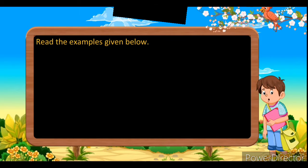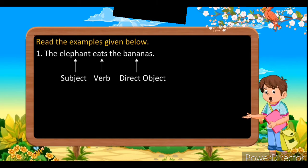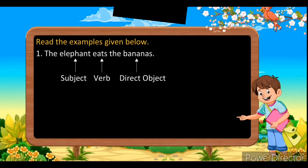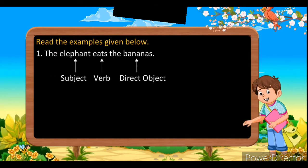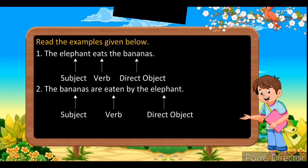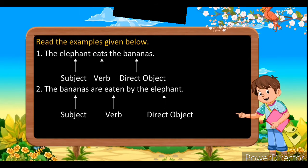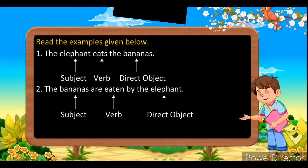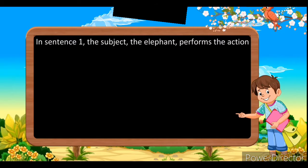Read the example and understand it. 'The elephant eats the banana.' Here, the elephant is the subject, eats is the verb, and the bananas is the object. Now in passive voice: 'The bananas are eaten by the elephant.' You can see that the bananas became the subject and the elephant became the object.